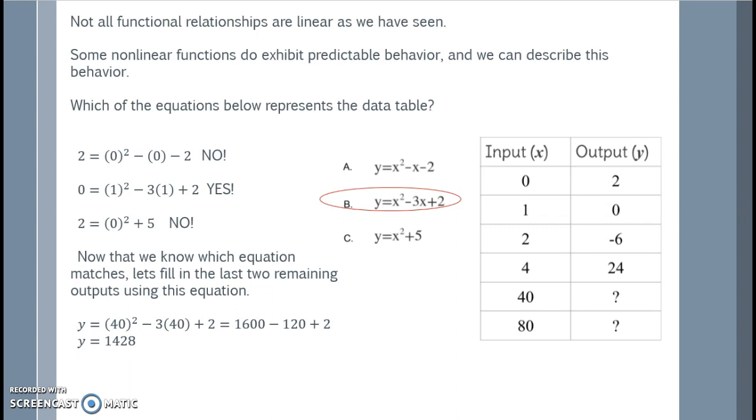I'll input 40 wherever I see x, so that we can identify our output. So 40 squared minus 3 times 40 plus 2 is 1600 minus 120 plus 2, so 1482.